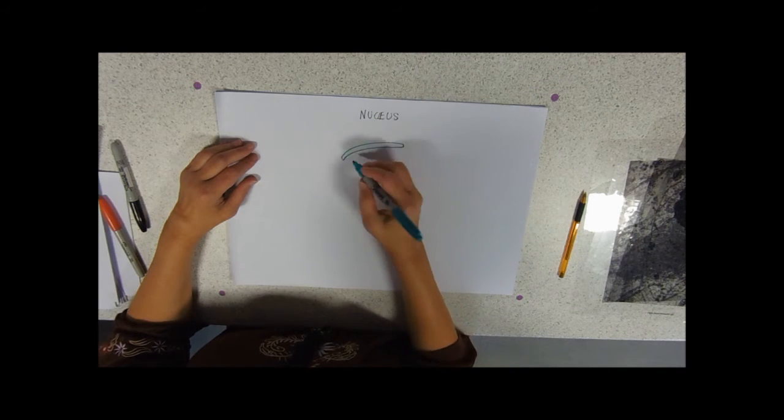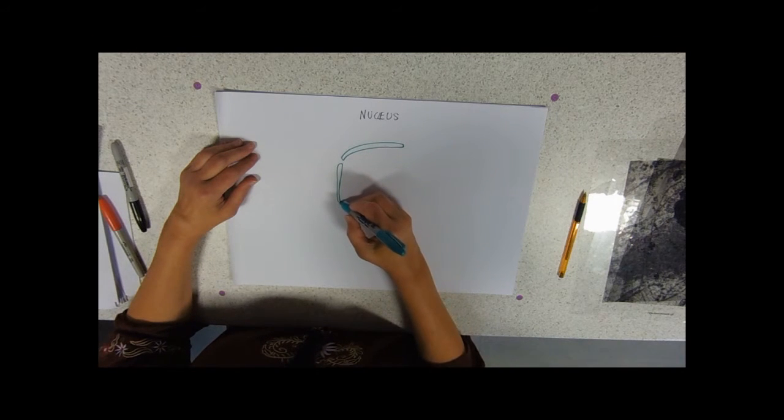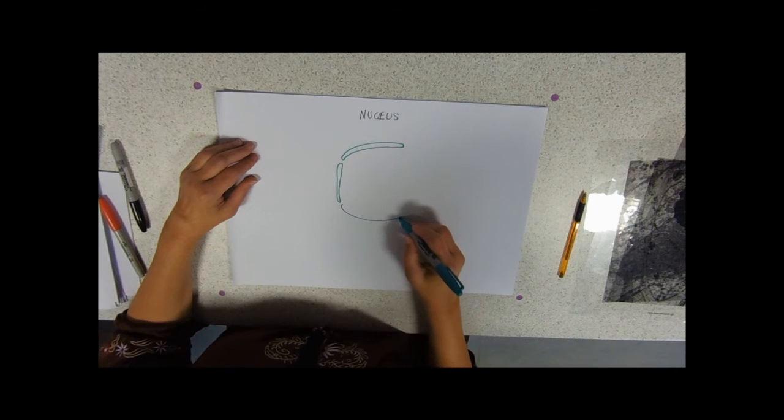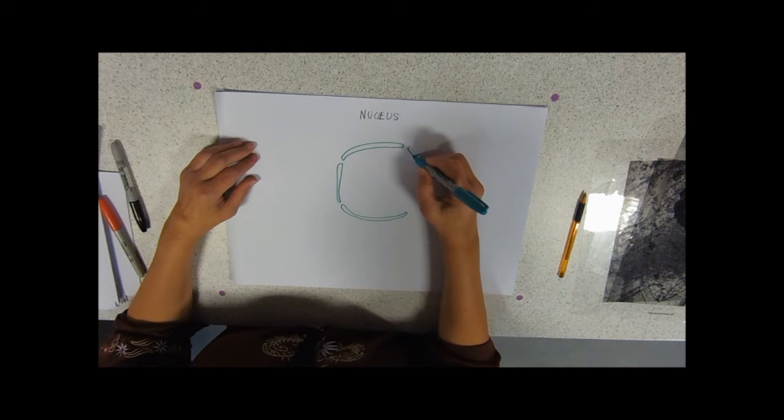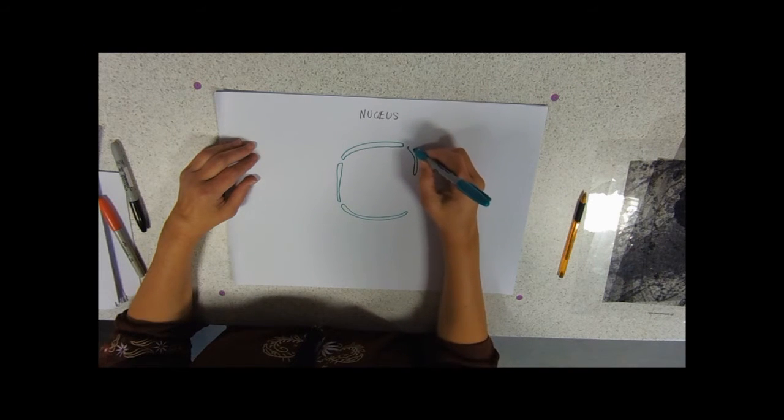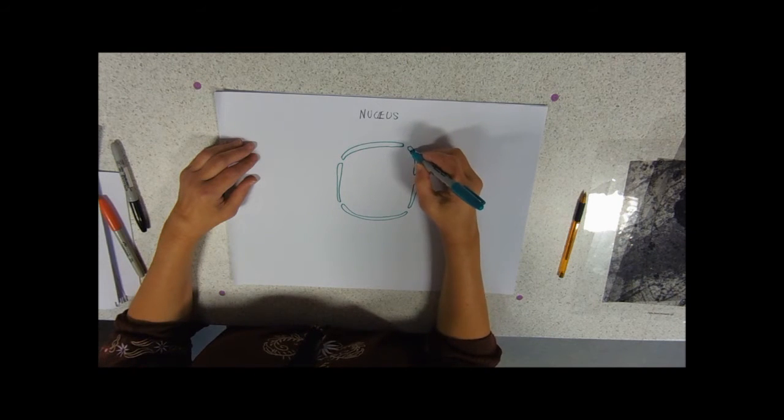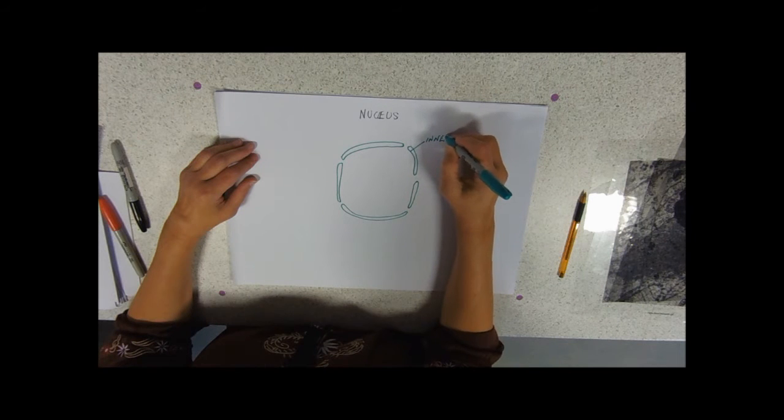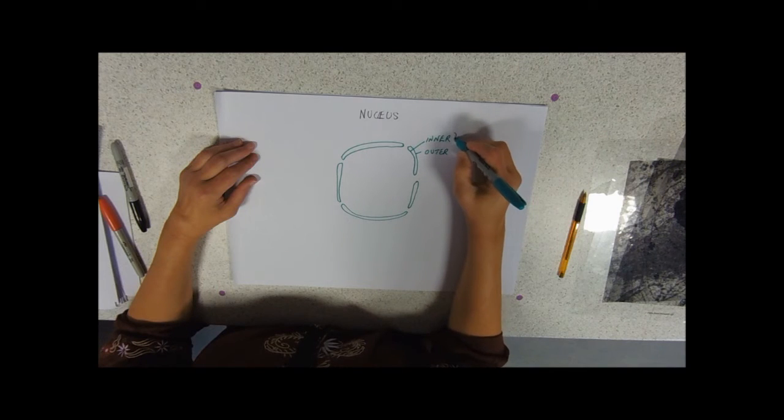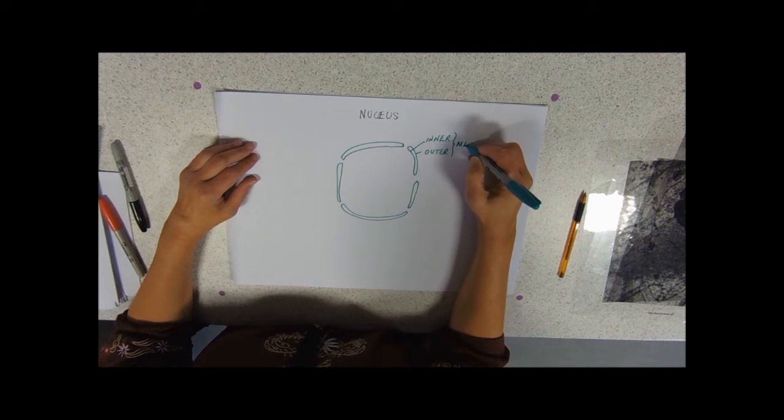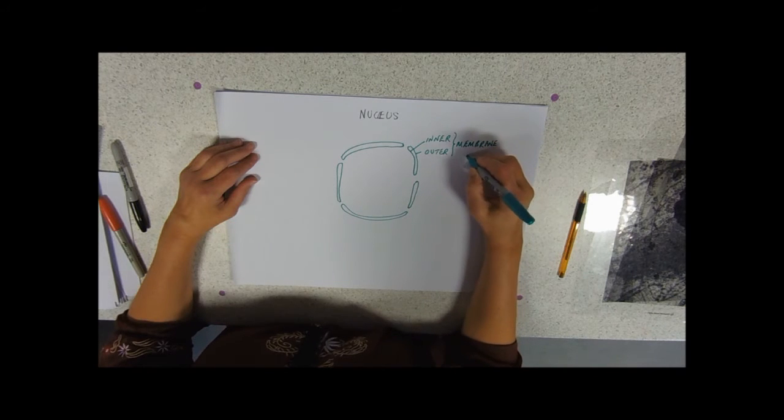So we've got a double membrane, but we need to remember that it's got pores through it, so it's not going to be a continuous double membrane. So I'm just making it vaguely circular—I'm not terribly good at drawing, but you don't need to be to be a biologist to be fair. And so we've got this double membrane, so we've got the inner and the outer membrane.